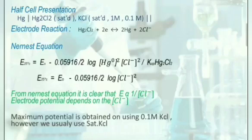The electrode potential of the calomel electrode is determined by the Nernst equation: E = E° - (0.059/2) × log[Cl⁻]². From this equation, it is clearly evident that the electrode potential of the calomel electrode depends on the concentration of chloride ions.